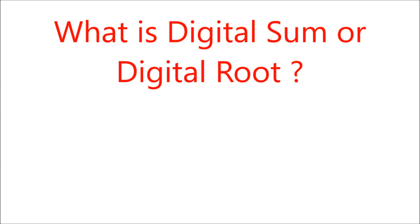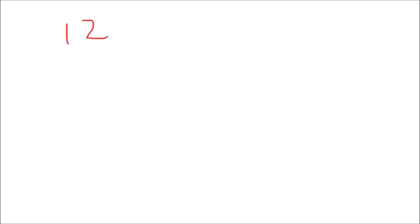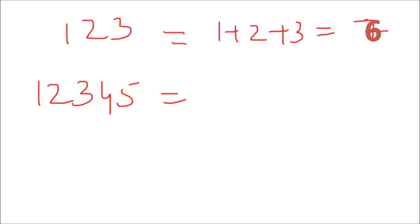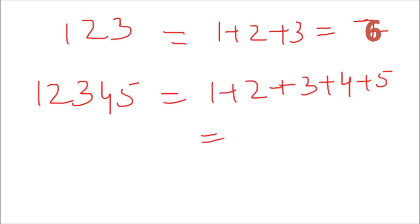Let me take an example. To calculate a digital sum, suppose the number is 123. If I'm asked to find the digital sum, I just add the digits: 1 plus 2 plus 3, which is 6. So the digital sum is 6. Now if the number is 12345, the digital sum is 1 plus 2 plus 3 plus 4 plus 5, which gives me 15. Since 15 is not a single digit number, we further add: 1 plus 5 gives 6, and that is the digital sum or digital root of this number.